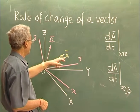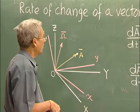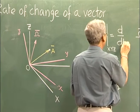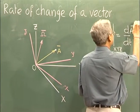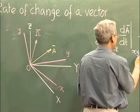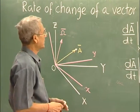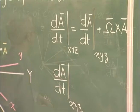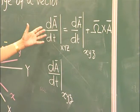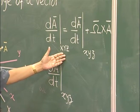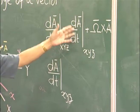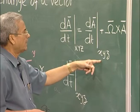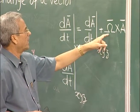In the general case when A is also changing with respect to the moving coordinate system, to get the total rate of change with respect to the fixed coordinate system, we add the rate of change with respect to the moving coordinate system. So: rate of change of a vector with respect to the fixed coordinate system equals rate of change as observed in the moving coordinate system rotating at angular velocity omega, plus omega cross A.